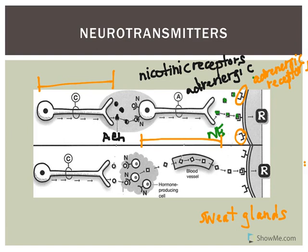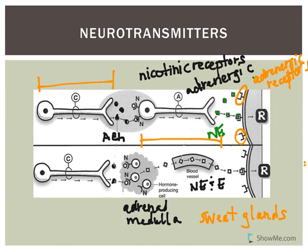The bottom picture represents the adrenal medulla. Pre-ganglionic neurons are releasing acetylcholine, and the receptors on the adrenal medulla are nicotinic receptors. That's going to result in release of epinephrine and norepinephrine into the bloodstream - these are modified sympathetic ganglia that are actually hormone-producing cells.